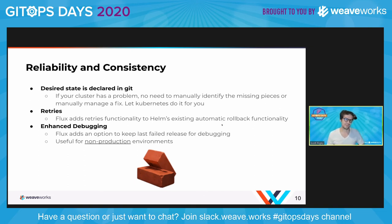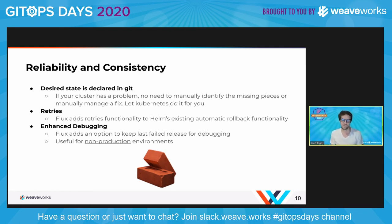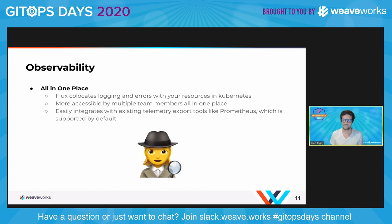Another major point for reliability is that your teams can debug in a way that's a lot more convenient than a standard Helm release. In a non-production environment, your teams may want to add an option to keep the last failed release so they can go back and figure out what happened. And ultimately, telemetry is important — the ability to understand and see all of what's happening in one place is one of the really nice things that Flux adds.